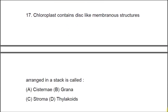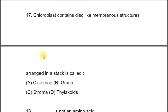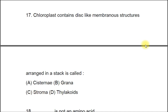Question 17: Chloroplast contains disc-like membranous structures arranged in a stack. This structure is called A) Cisternae, B) Grana, C) Stroma, D) Thylakoids. The correct answer is D, Thylakoids.